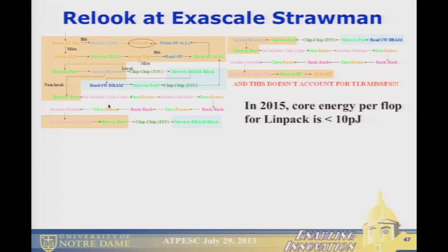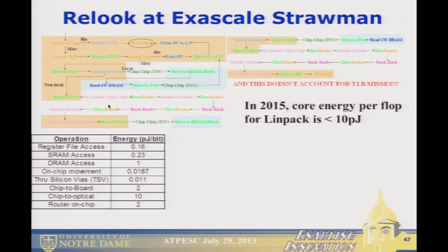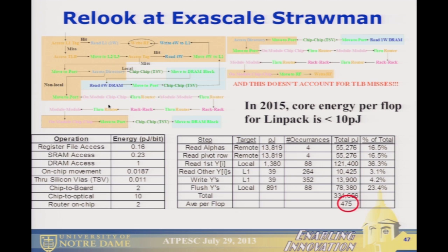Using energy numbers derived from the Exascale report — picojoules for different kinds of memory operations — and doing a LINPACK analysis in a rational fashion, the average memory operation on LINPACK for this configuration was about 475 picojoules. This is to support one flop that took 10 picojoules — so memory costs 50 times more. I could be off by an order of magnitude and this is still a disaster.